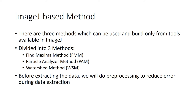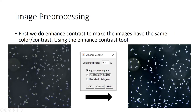The first set of methods is the image-based methods. There are three methods which can be used and built only from tools available in MSJ, so you don't need plugins or programs from other tools. These are the Find Maxima Method, Particle Analyzer Method, and Watershed Method. Before extracting data we will do pre-processing to reduce error during data extraction.